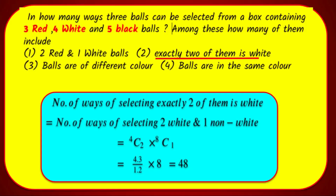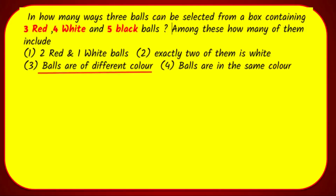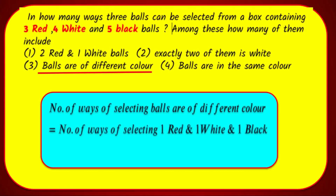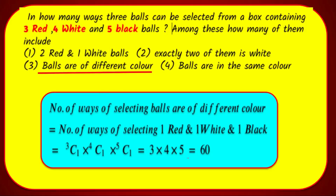Third sub-question: Balls are of different colors. We select 1 red, 1 white, and 1 black. The number of ways is 3C1 into 4C1 into 5C1 = 3 × 4 × 5 = 60 ways.